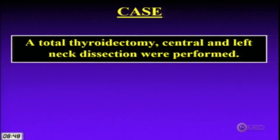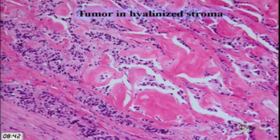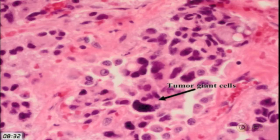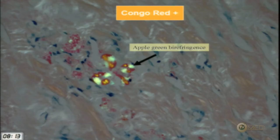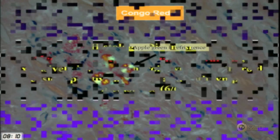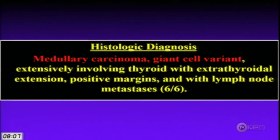After a total of 19 months, the tumor was deemed surgically resectable — not behaving like anaplastic carcinoma. The patient had a total thyroidectomy and central and left neck dissection. Histology shows loosely cohesive tumor cells in dense hyaline stroma. High power reveals bizarre tumor giant cells and ring cells with a plasmacytoid look. Calcitonin stain was very strongly positive, and Congo red showed apple-green birefringence.